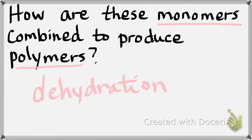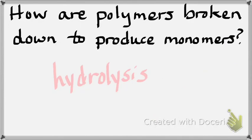Stay on page 33 for the last part of number two. How are polymers broken down to produce monomers? Hydrolysis. It's the reverse of dehydration. Is everybody okay on number two? There was quite a bit there.